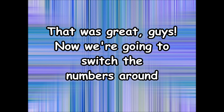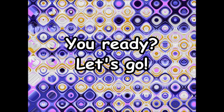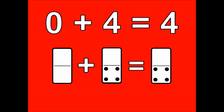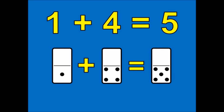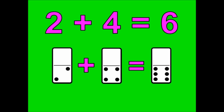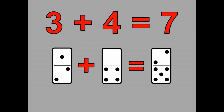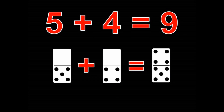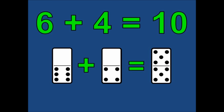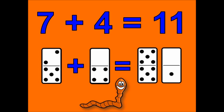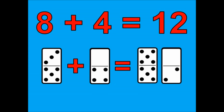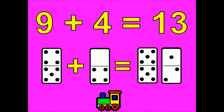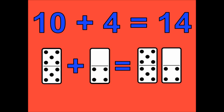That was great guys. Now we're gonna switch the numbers around. We're gonna start with zero plus four and go up to ten plus four. You ready? Let's go. Zero plus four is four. One plus four is five. Two plus four is six. Three plus four is seven. Four plus four is eight. Five plus four is nine. Six plus four is ten. Seven plus four is eleven. Eight plus four is twelve. Nine plus four is thirteen. Ten plus four is fourteen.